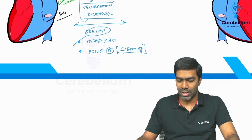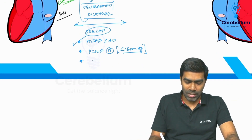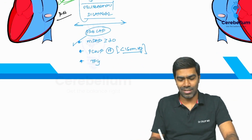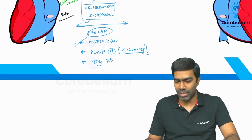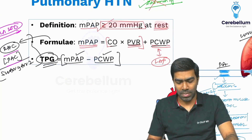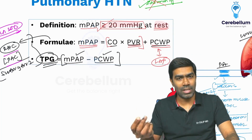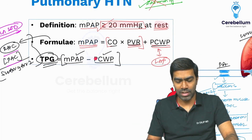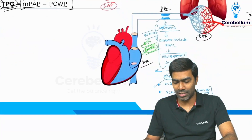By definition, PCWP should be less than 15 mmHg. The transpulmonary gradient will also be increased because TPG equals MPAP minus PCWP. Here, MPAP alone is rising due to increasing pulmonary vascular resistance while PCWP is normal, so TPG increases.